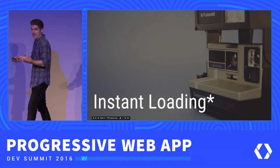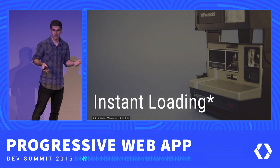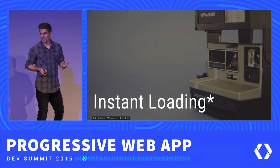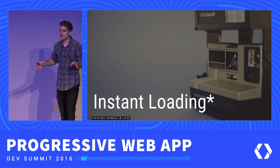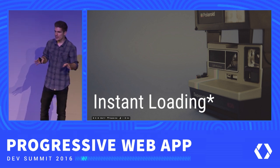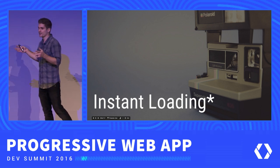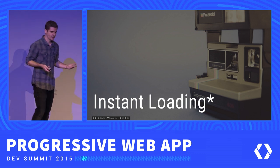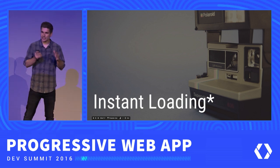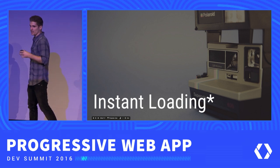With the web, the first load involves the network and downloading over HTTP before the service worker is there. The optimizations we'll talk about also benefit the service worker, though the impact will be a little smaller. I'll focus on the first load because that's the worst-case scenario on the web — you have nothing cached locally so you have to get everything over the network.